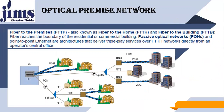Now coming to Optical Premise Network. Premise means the end location where communication reaches the user — in some building or office. These are the customer premises, where the customer lives or stays. Optical Premise Network means fiber to the premises, FTTP, also known as fiber to the home and fiber to the building. Fiber reaches the boundary of the residential or commercial building. Passive optical networks and point-to-point architectures deliver triple play service over FTTP networks directly from an operator central office. These are the customer premises — houses and buildings.